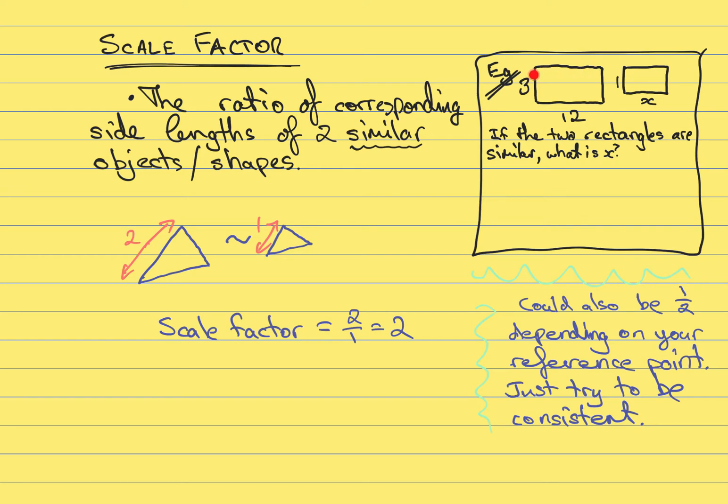So here we have a rectangle with a side length of 3 and the other side of length 12. The one we're looking at figuring out x for has a side length of 1 and a side length of x. So I'm going to take it that we have a scale factor given by the ratio of these two sides, 3 and 1.